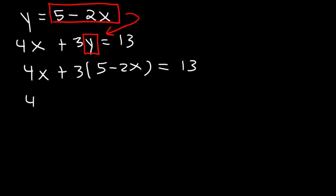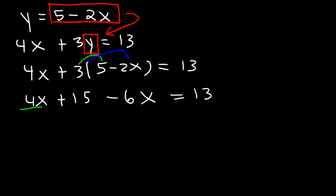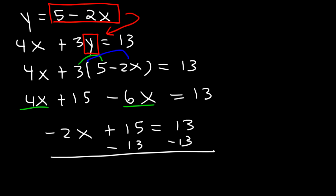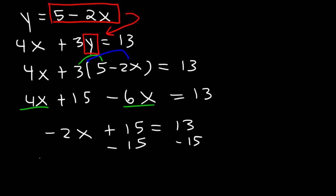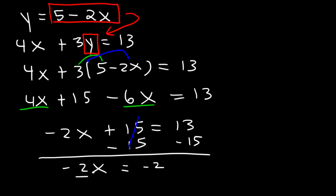Distributing 3: 3 times 5 is 15, and 3 times negative 2x is negative 6x. Combining like terms: 4x plus negative 6x is negative 2x. So negative 2x plus 15 equals 13. Subtracting 15 from both sides: negative 2x equals 13 minus 15, which is negative 2. Dividing both sides by negative 2 gives x equals 1.